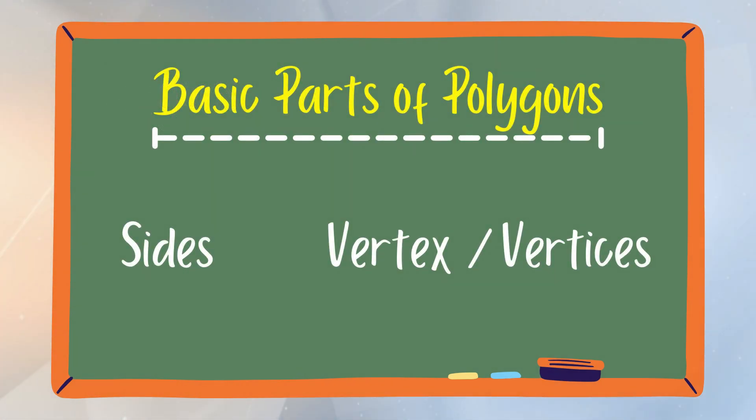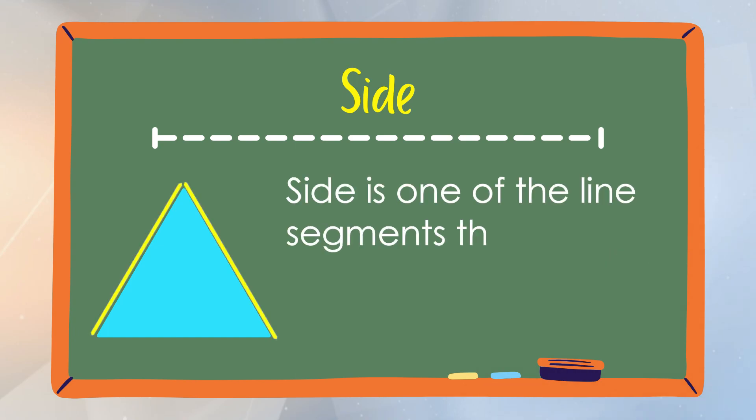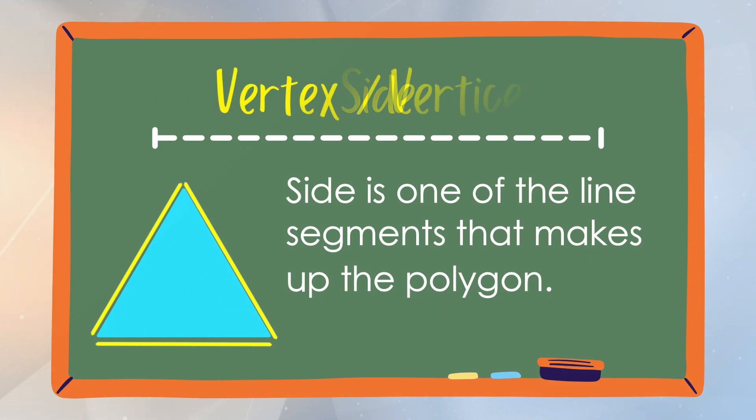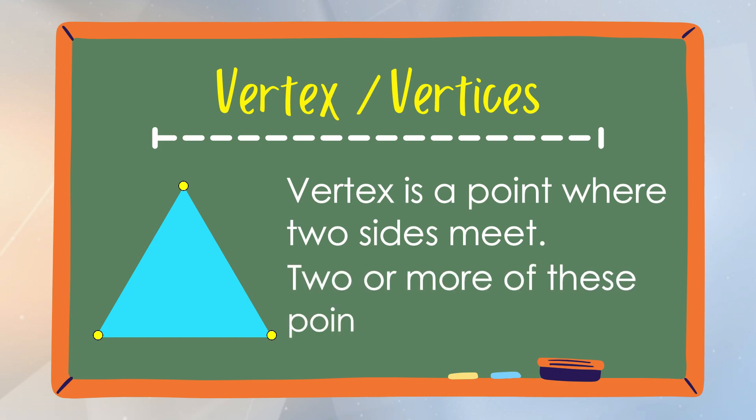The basic parts of a polygon are the side and the vertex. The side is one of the line segments that makes up the polygon. A vertex is a point where two sides meet. Two or more of these points are called vertices.